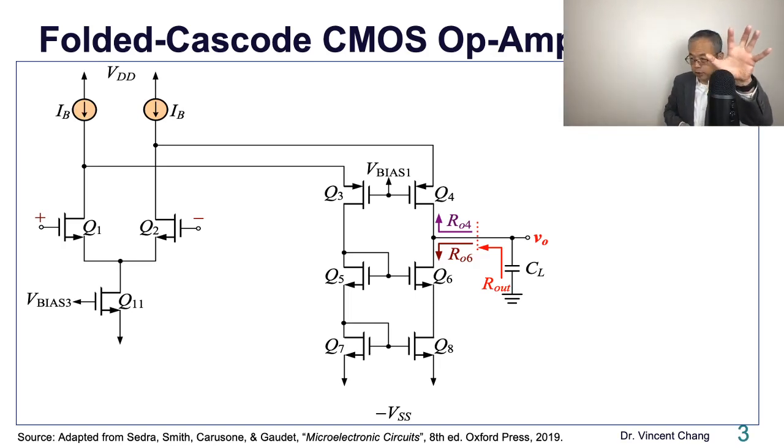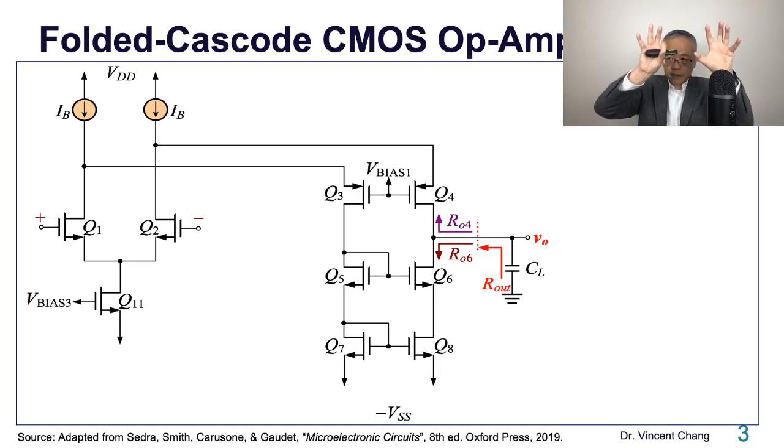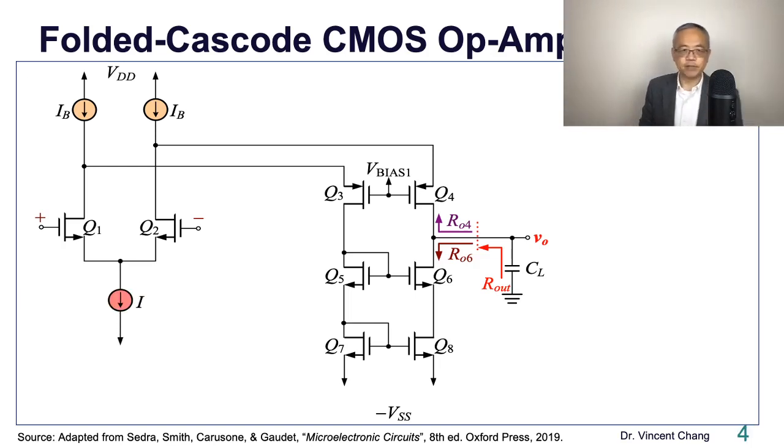See, Q9 and Q10 now becomes the constant current source with the bias current of I_B. And the one on the bottom, Q11, is also another constant current source. This is replaced by a current source symbol of I.